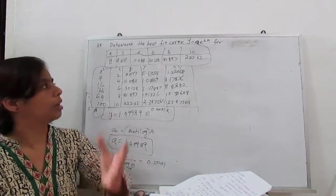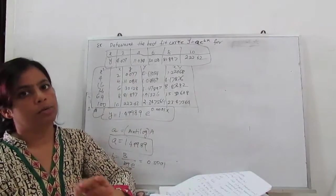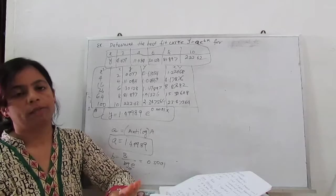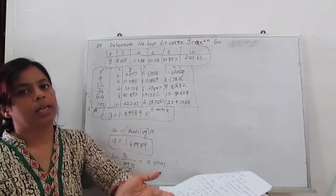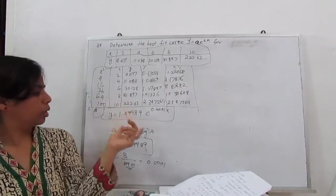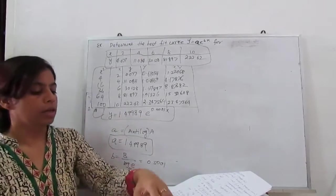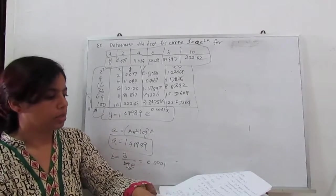So that is similar how to find the curve for straight line and parabola. Means you have to find the normal equation, construct the table, substitute the value very carefully, then solve it. At the end, you can take again the antilog and substitute the constant. You will get the result for exponential curve.